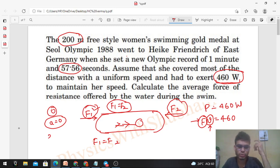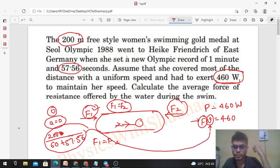So look, distance is given as 200 meters divided by time. Time is 1 minute and 57.56 seconds. So 1 minute means 60 seconds plus 57.56 seconds. This is meter per second, this is the speed of the swimmer in meter per second. So you have to substitute this value here.